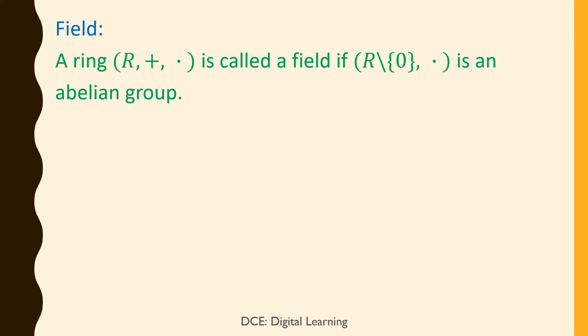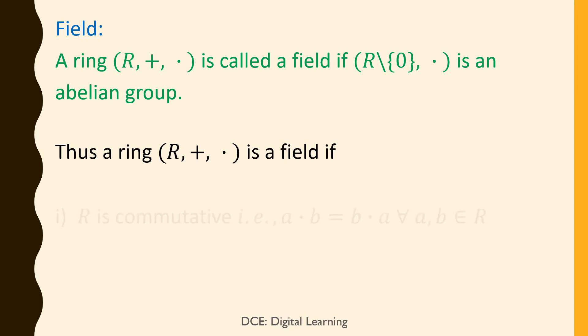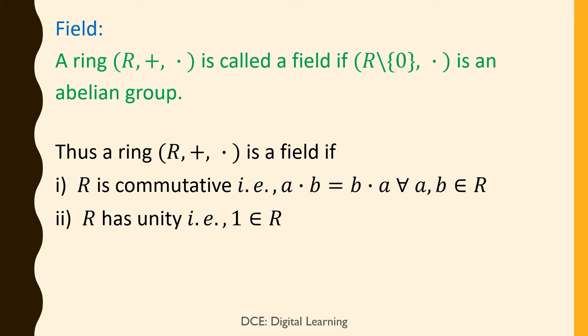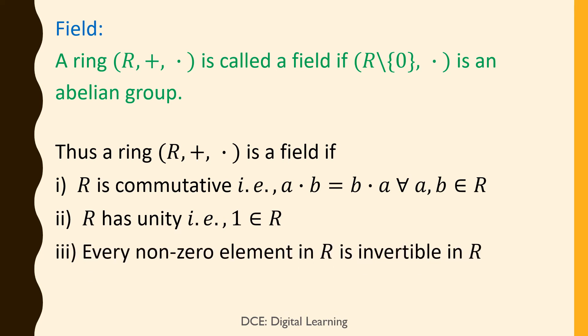Definition of field. A ring R (plus, dot) is called a field if the non-zero elements of R form an abelian group with respect to multiplication. Thus, a ring R (plus, dot) is a field if: R is commutative, i.e., a·b = b·a for all a, b belonging to R; R has unity, i.e., 1 belongs to R; every non-zero element in R is invertible in R.